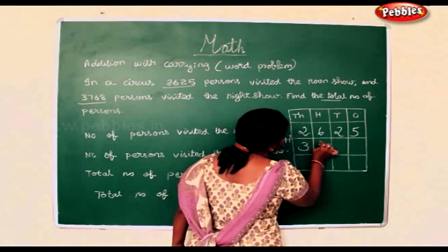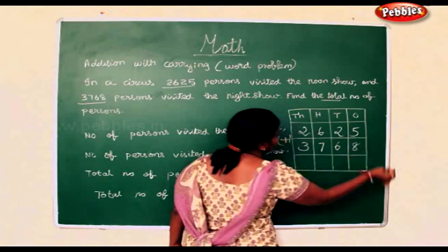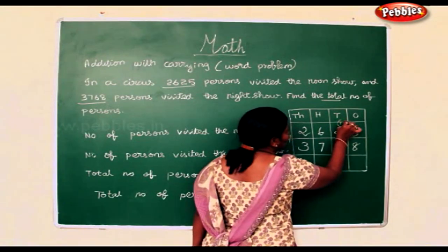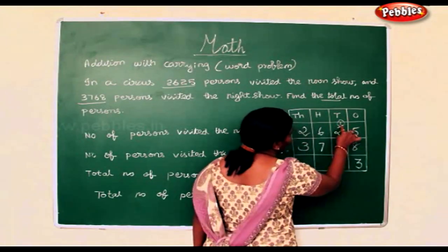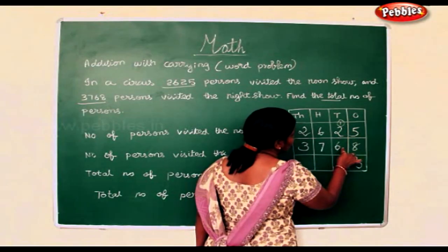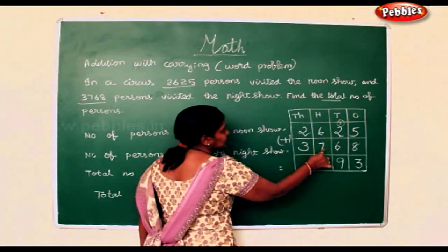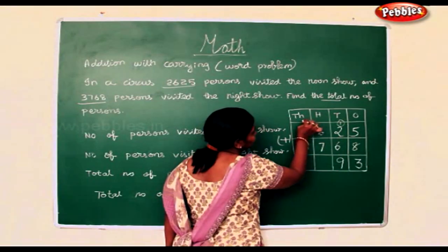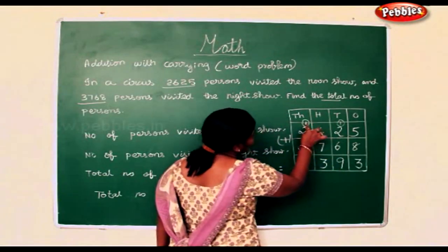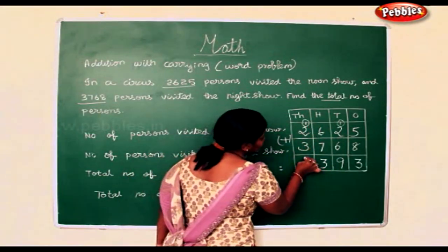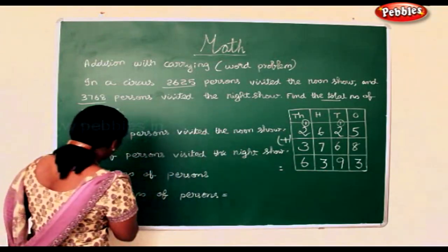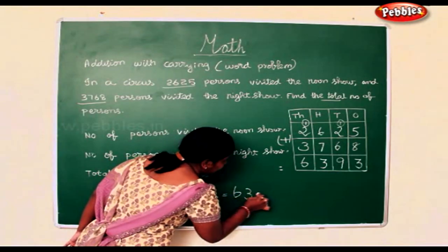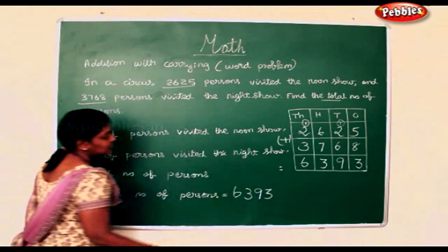Now 8 add 5 is 13. 1 here, 3 in the ones place. 1 add 2 is 3, 3 add 6 is 9. 6 add 7 is 13. 1 add 2 is 3, 3 add 3 is 6. So the total number of persons is 6,393.